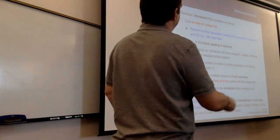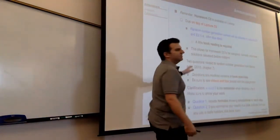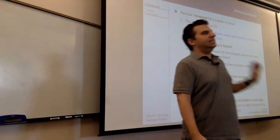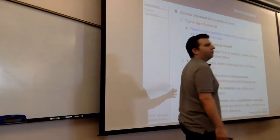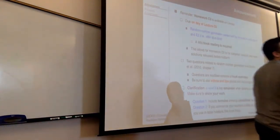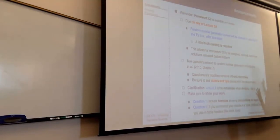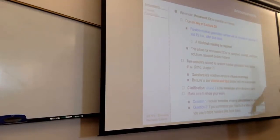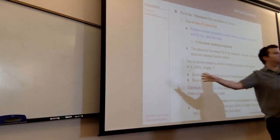Homework C2 is available. There are going to be two homeworks before the midterm: C2 and D2. C2 has two questions — generating random numbers in one and testing for randomness in the other. A bunch of people have already submitted it; I think it's relatively straightforward. Homework D2, which is also available, is going to be a little more complicated. It requires you to remember some of your calculus. The content on this homework will be covered on the midterm, so you should view this as practice for the midterm.